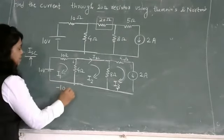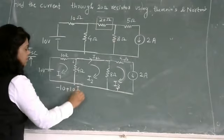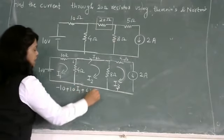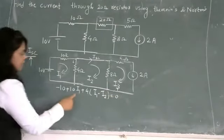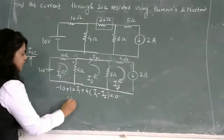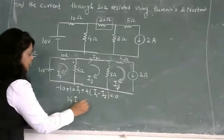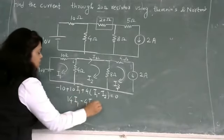Minus 10 plus 10i1 plus 4i1 minus i2 equal to 0. So 10 plus 4, 14i1 minus 4i2 is equal to 10.